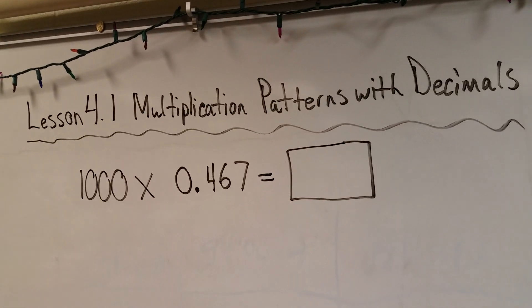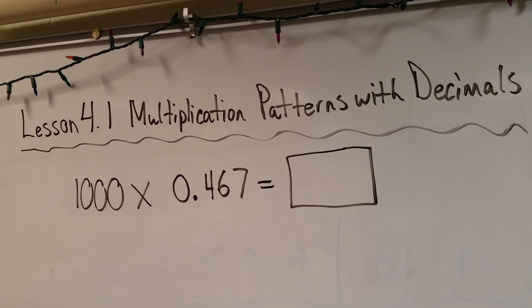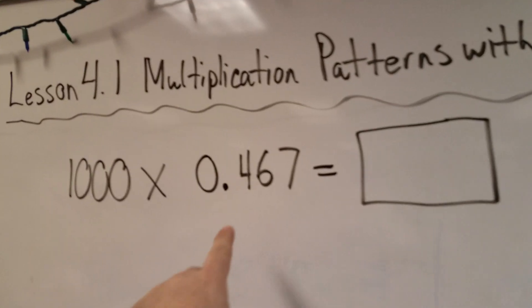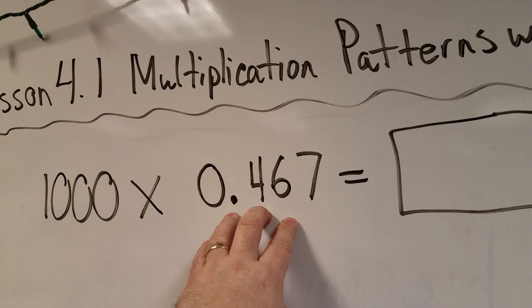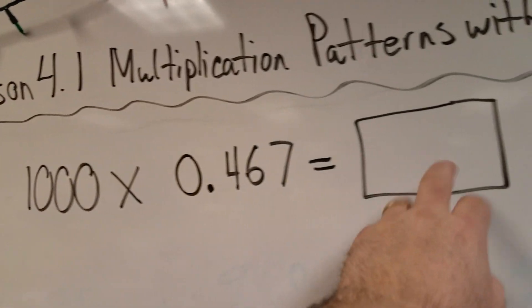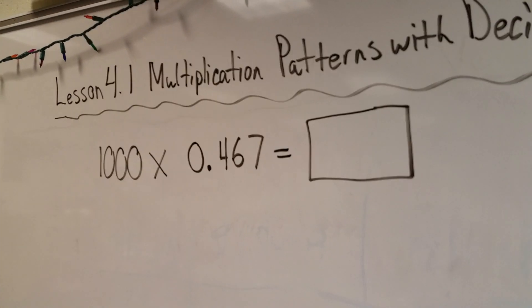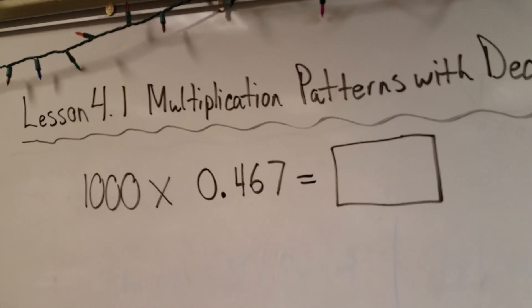So we have this problem, 1,000 times 467 thousandths. Now remember, this number right here, 467 thousandths, this is less than 1. Something less than 1 times 1,000, our answer should be less than 1,000. So we're going to use patterns to figure this out.